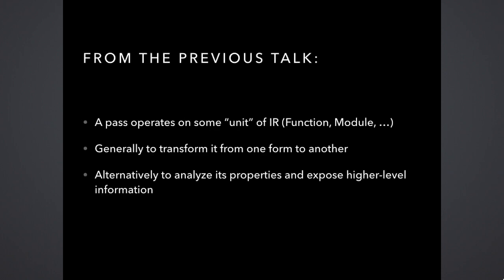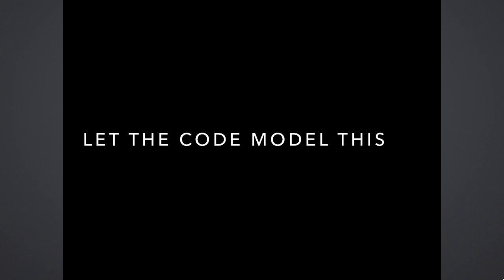From the previous talk, the key things to know: a pass in LLVM's world is something which operates on some unit of IR. Units are fuzzily defined — you could have a function, you could have a module. You're going to transform it from one thing into another, probably equivalent for some definition of equivalence. Alternatively, a pass can analyze that chunk of IR and derive some higher-level information about what that IR does. I started from these very basic ideas about what a pass looks like and tried to design the pass management layer around this simplistic view.